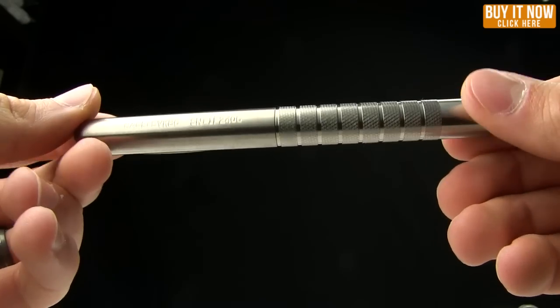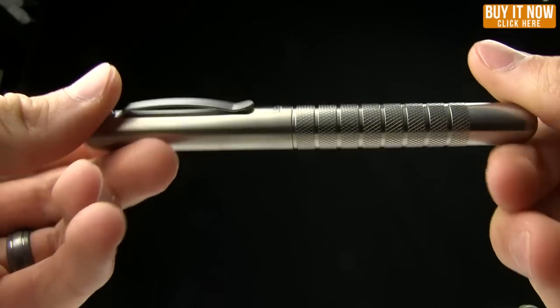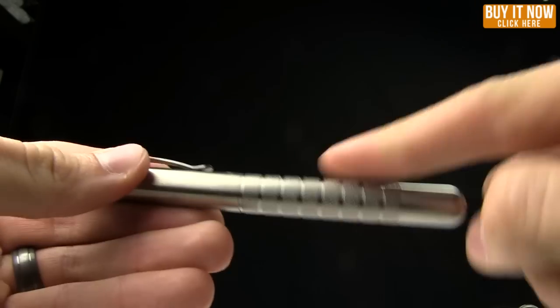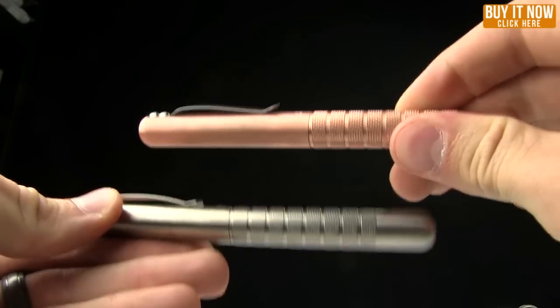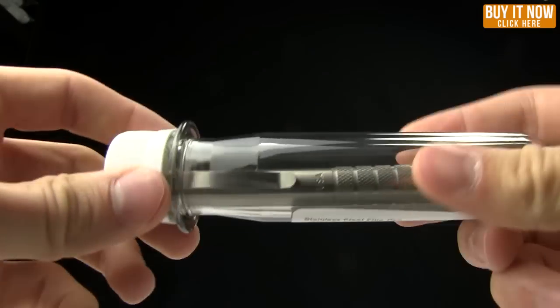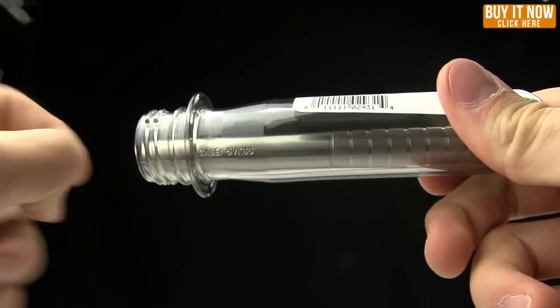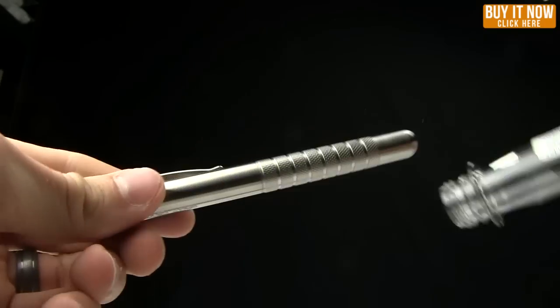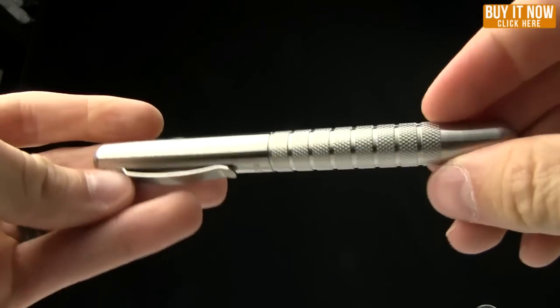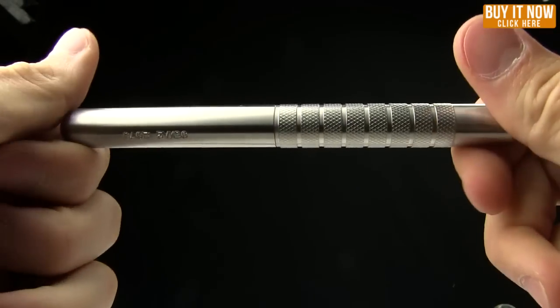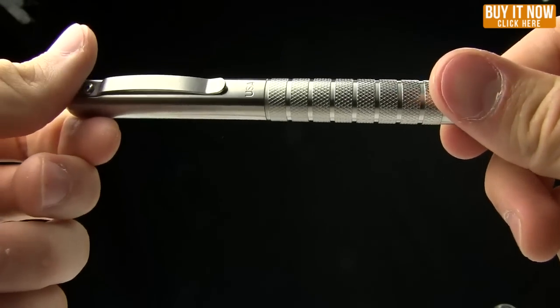Today on BladeHQ.com, we are taking a look at the Embassy pen line. We've got the titanium version, the copper version, as well as the stainless steel version. They all come in kind of this beaker, scientific beaker looking deal. Just unscrew that and pull it out. So very cool stuff. I'm going to go over the specs on it with you and tell you to buy it at BladeHQ.com.